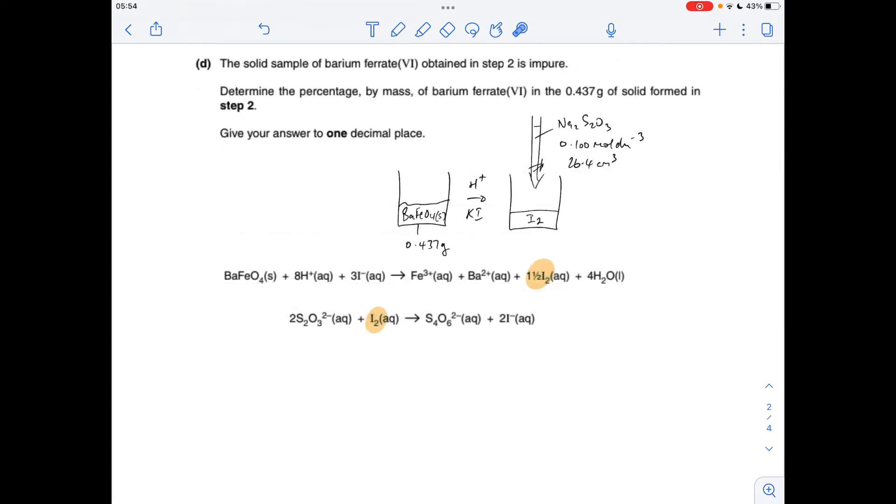Moving on to the calculation now, we were told loads of information about the formation of this stuff here. But all the calculation wants us to do is work out what percentage of that 0.437 grams is that actual chemical. It's been formed, washed, and dried. It's then reacted with H⁺ and KI, or I⁻ ion. It's basically this reaction here. That generates iodine, which is then titrated against using this sodium thiosulfate of that concentration. And that was the titre.